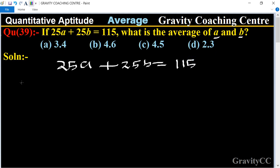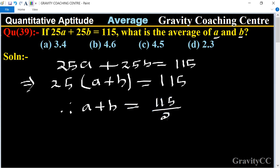First we take 25 as a common factor. So a + b equal to 115. Therefore a + b equal to 115 upon 25.